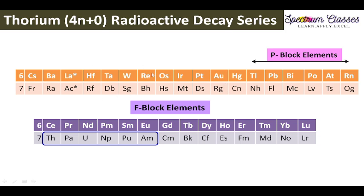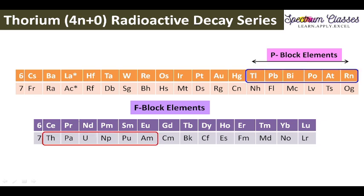Here I have shown you the sixth and seventh period of the periodic table. In this periodic table we have the lanthanide and actinide series, which are placed outside the periodic table. In the sixth period we have the p-block elements. These p-block elements are important, as I have highlighted. This many number of elements need to be memorized; the rest are not required for these four radioactive decay series.